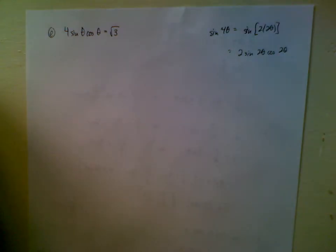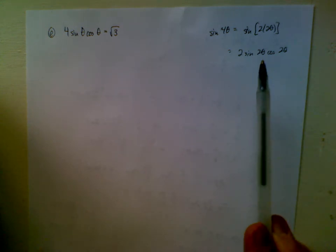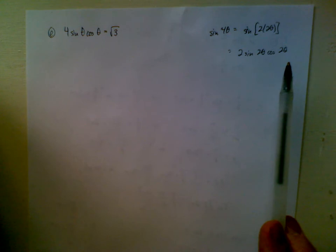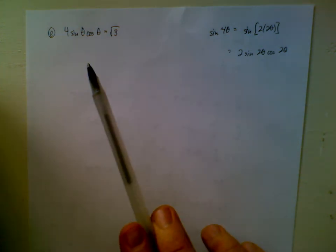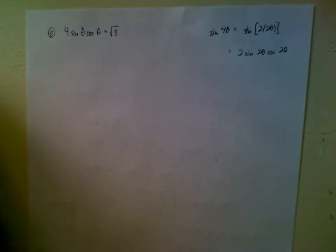Okay, which you can see pretty clearly is not the same thing as 4 sine theta cosine theta. You could continue simplifying it. You could use some more double angle identities for sine and cosine, but you're not going to end up with 4 sine theta cosine theta.